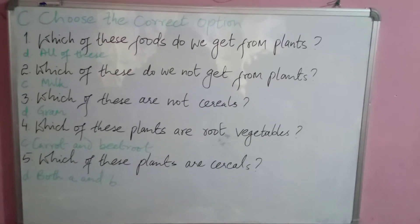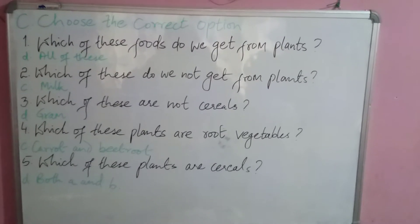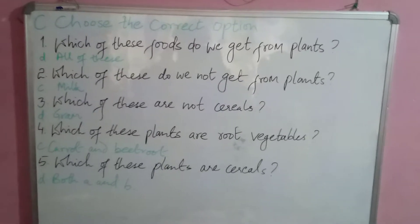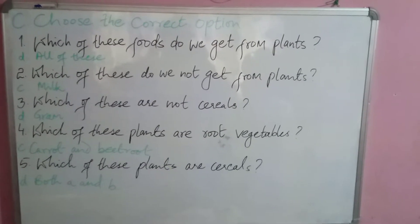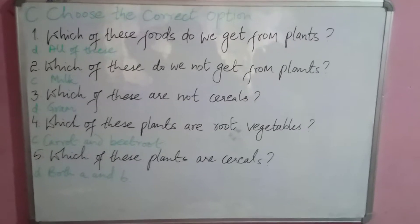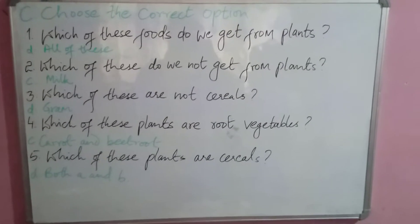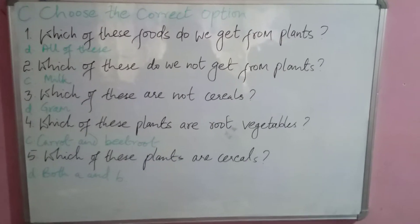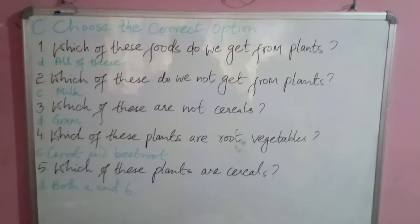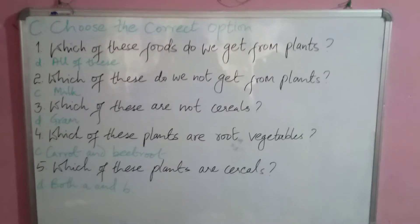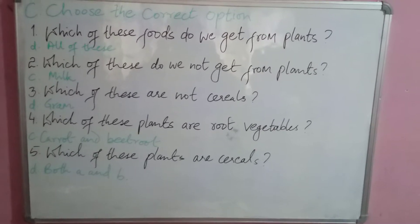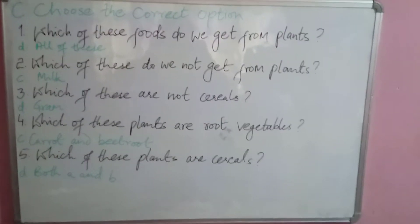Let's begin with question C: choose the correct options. Question number one — which of these foods do we get from plants? The options are cereals and pulses, fruits and vegetables, and all of these. The correct option is all of these.